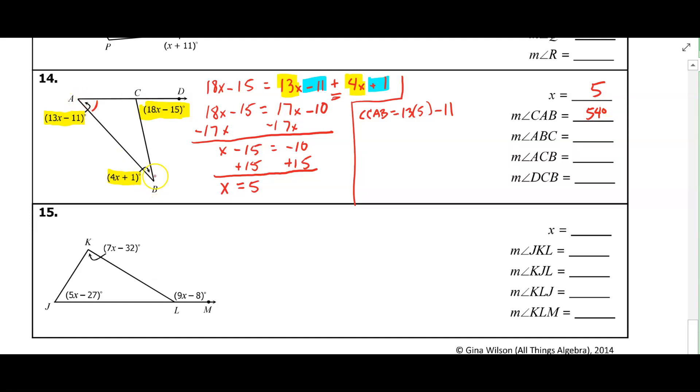And then ABC, that's the angle at the bottom. So angle ABC, that's 4 times 5 plus 1. So that's 21.